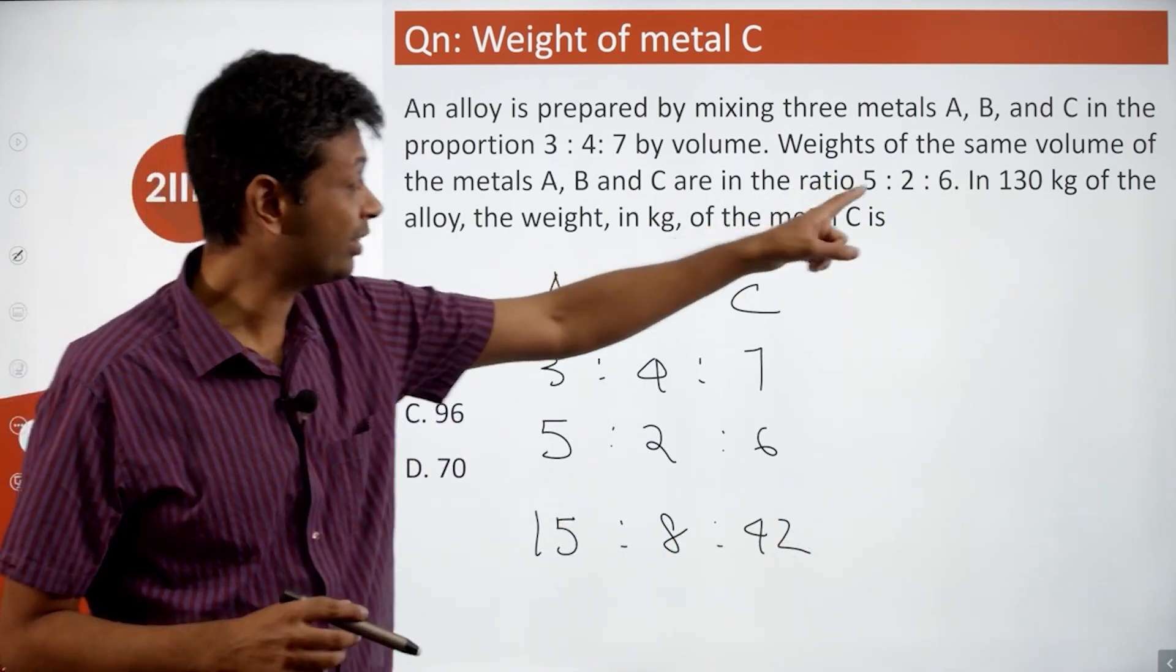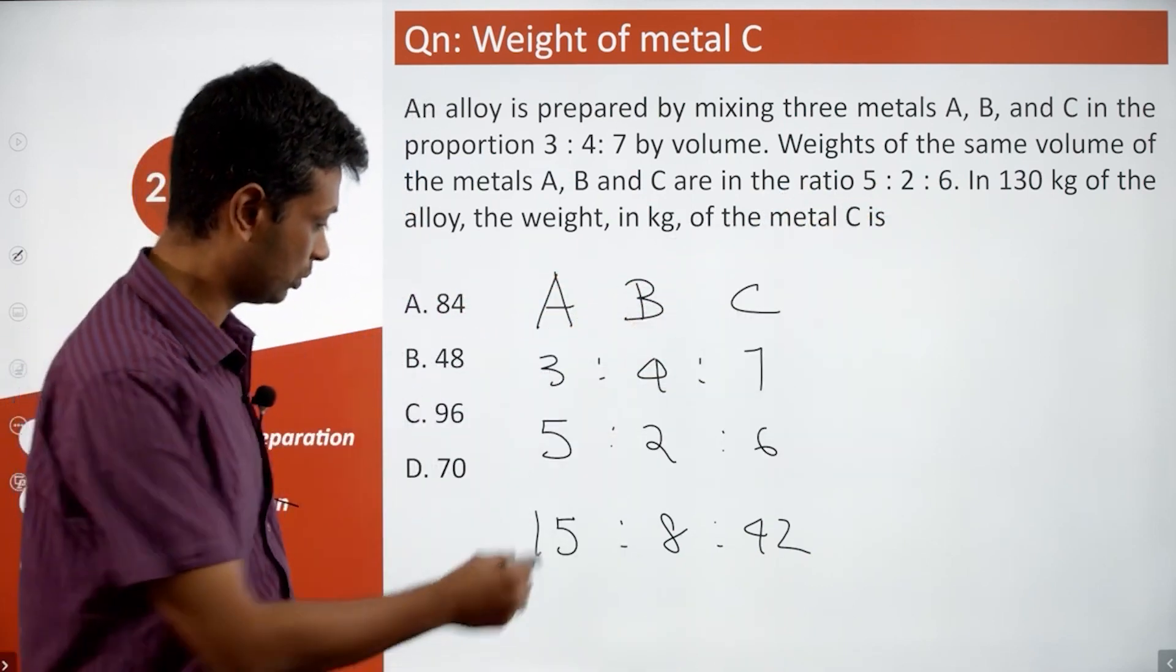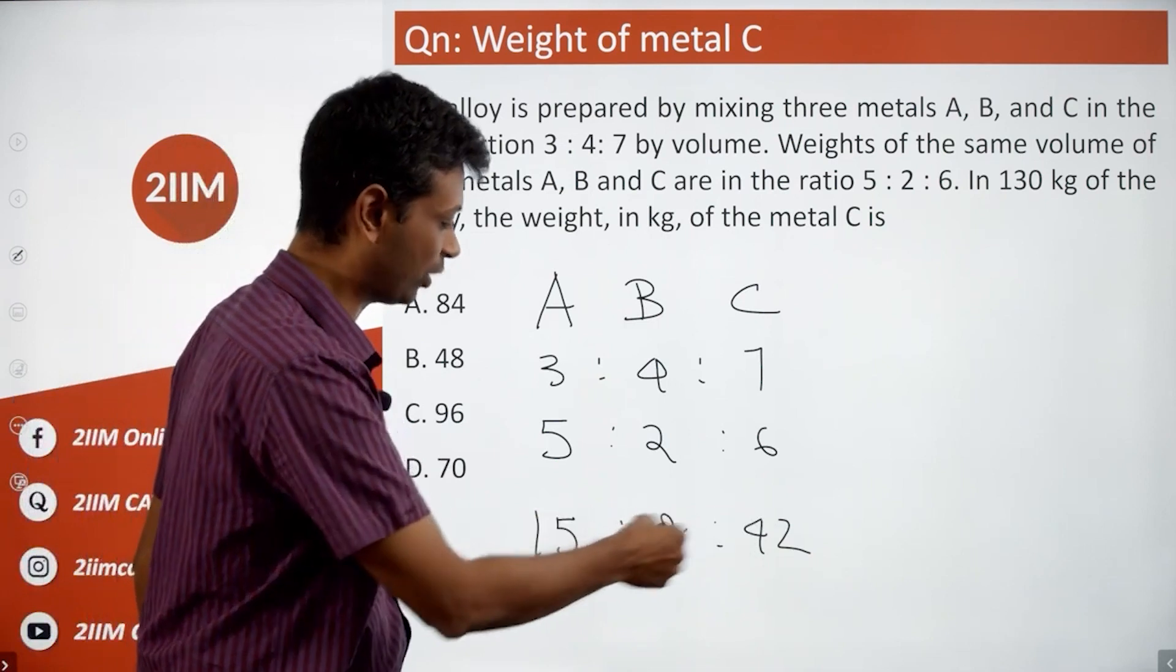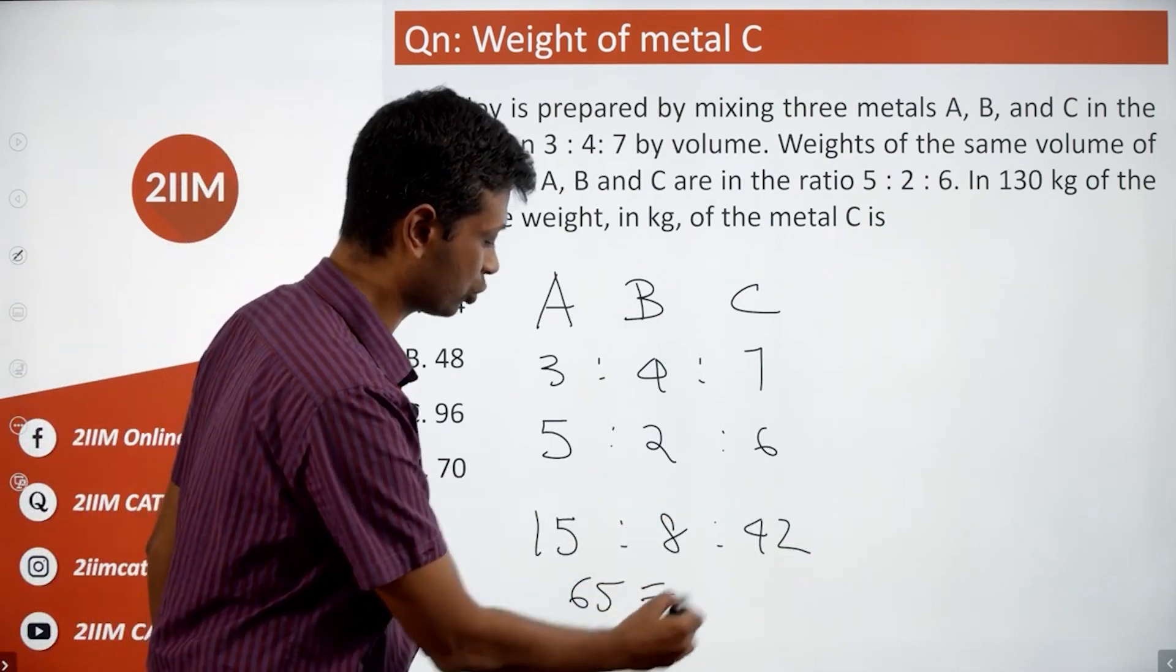The question here is 130 kilograms of the alloy, the weight in kilogram of the metal C is. So 15:8:42, add all 3 up, this is 65 units. So 65 units correspond to 130 kilograms.